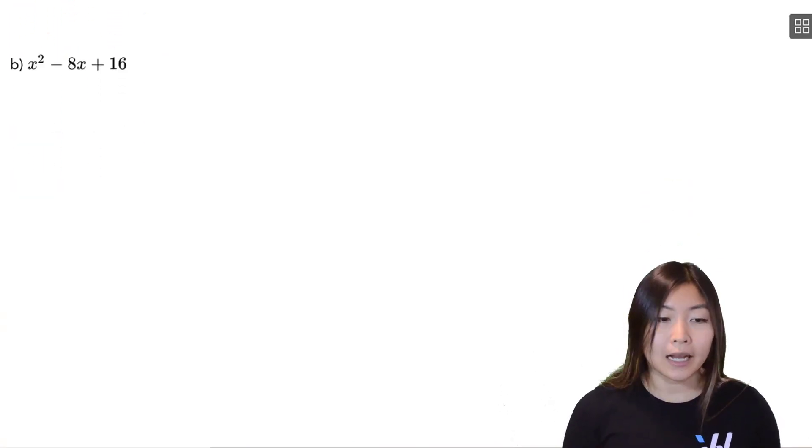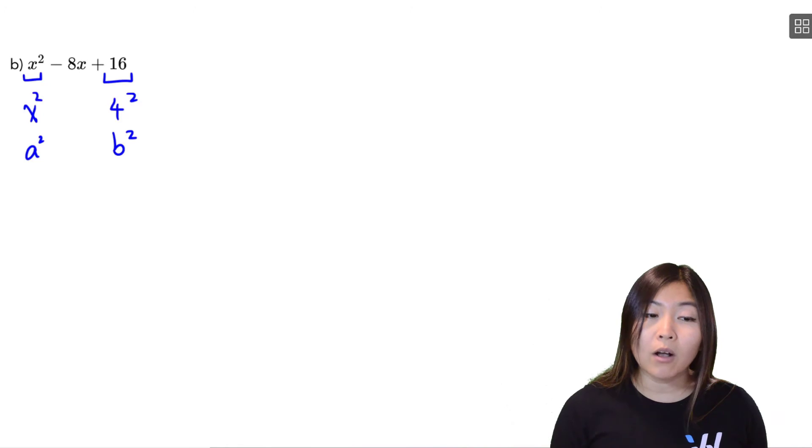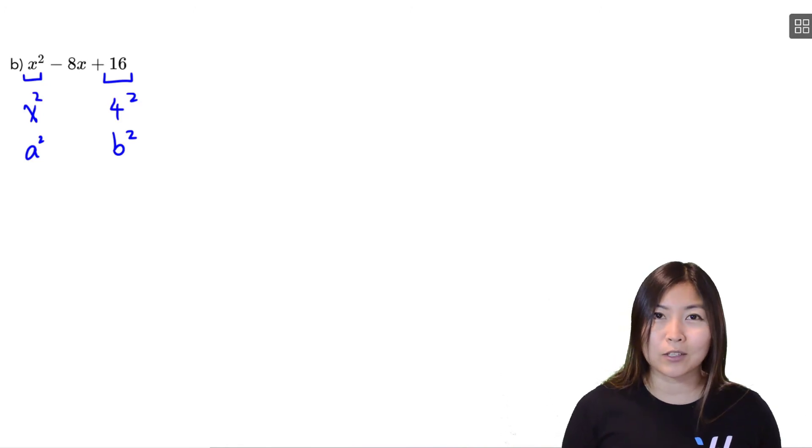All right, in part b, again, I notice that my first term here is a perfect square. That is just x squared, so that's my a squared. And I notice that my constant term is 4 squared, which is 16, so I have a b squared. So I also seem to have a perfect square trinomial.